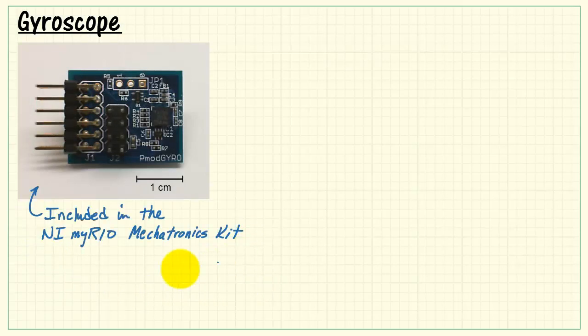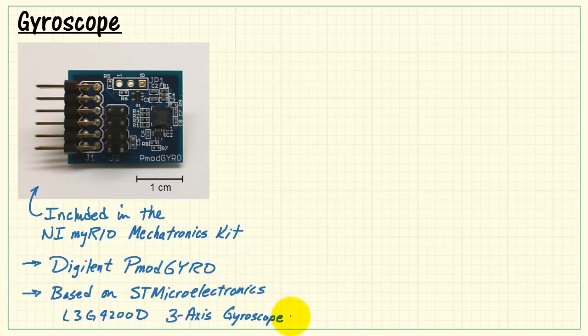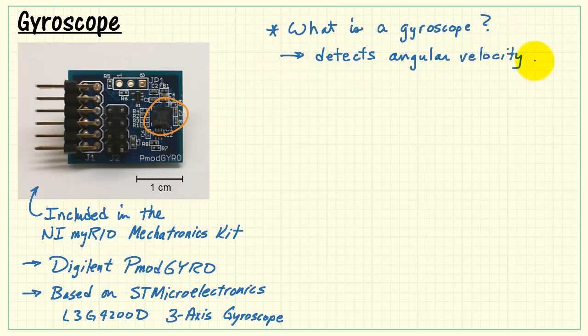This is the gyroscope that's included in the NI MyRio mechatronics kit. It's the Digilent PMOD Gyro based on the L3G-4200D three-axis gyroscope located right here. Well, what exactly is a gyroscope? A gyroscope detects angular velocity or rate about an axis.